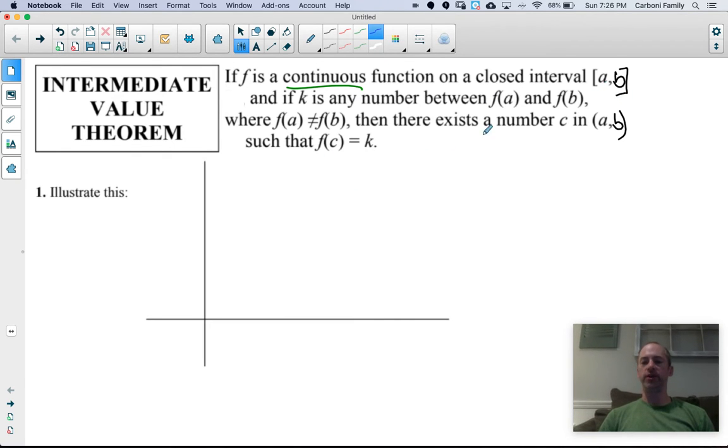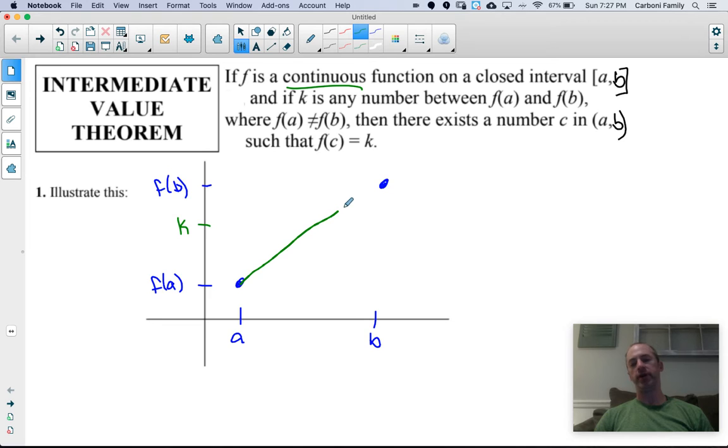We have a continuous function from A to B, so I'm just going to randomly define two points on the x-axis to be A and B. F of A and F of B are not the same, so wherever you start at A, you must finish at a different value of B, and your function is continuous. So F of A and F of B are your y-coordinates at those two points. If you have a continuous function that goes from this point to that point, and K is some number between F of A and F of B, if I connect this point to that point, I'm going to have to cross a y-value of K somewhere.